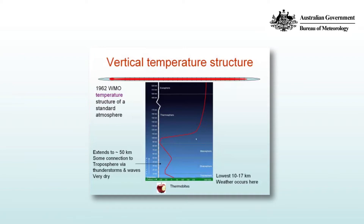The atmosphere is split into various sections. The lowest 10 to 17 km is known as the troposphere, and that depth varies seasonally and latitudinally. The troposphere is capped off by something known as the tropopause, which is shown here as a region where the temperature does not increase or decrease — it's roughly constant with height. On average, the temperature decreases with height in the troposphere, and the reason for this is that the surface of the Earth absorbs radiation more efficiently than the free atmosphere itself.